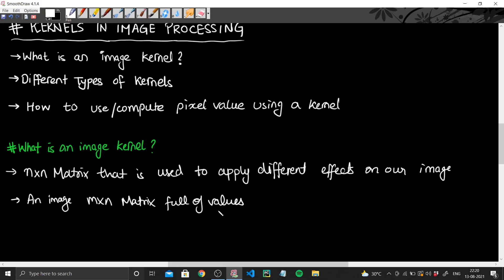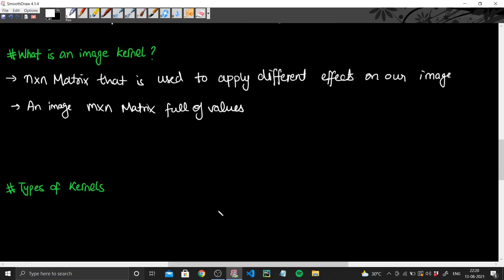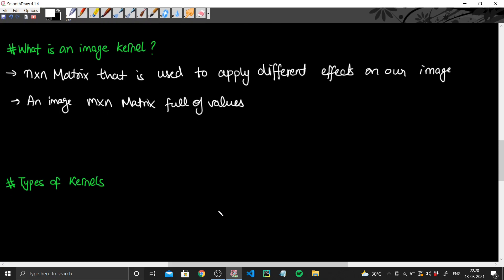So that image is nothing but a 2D matrix and image kernel is an n cross n matrix that you will use to apply different effects on the images.